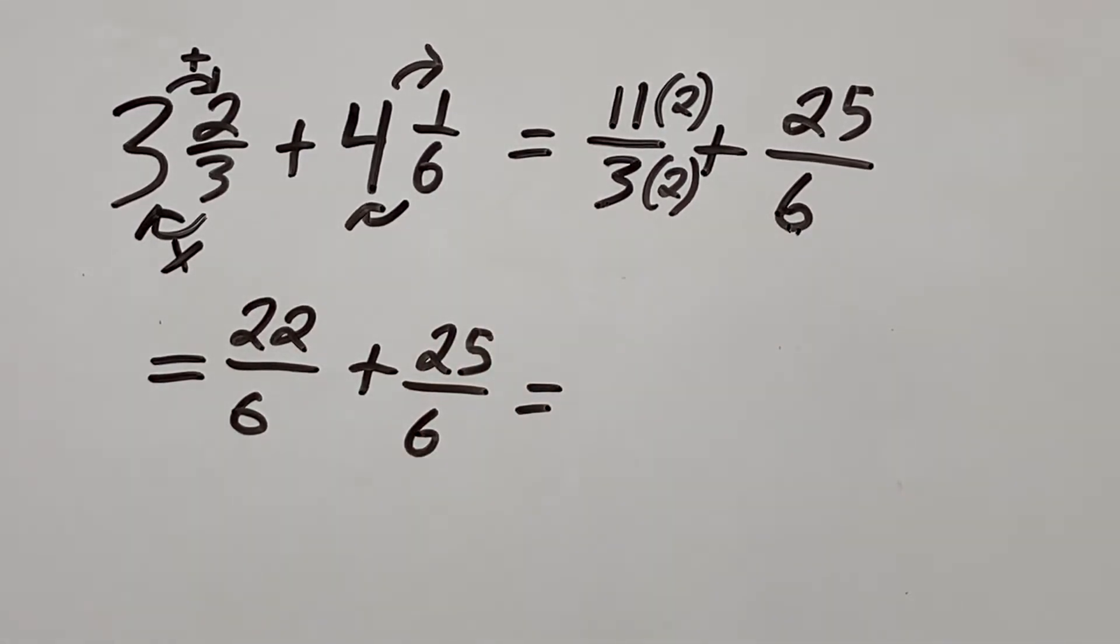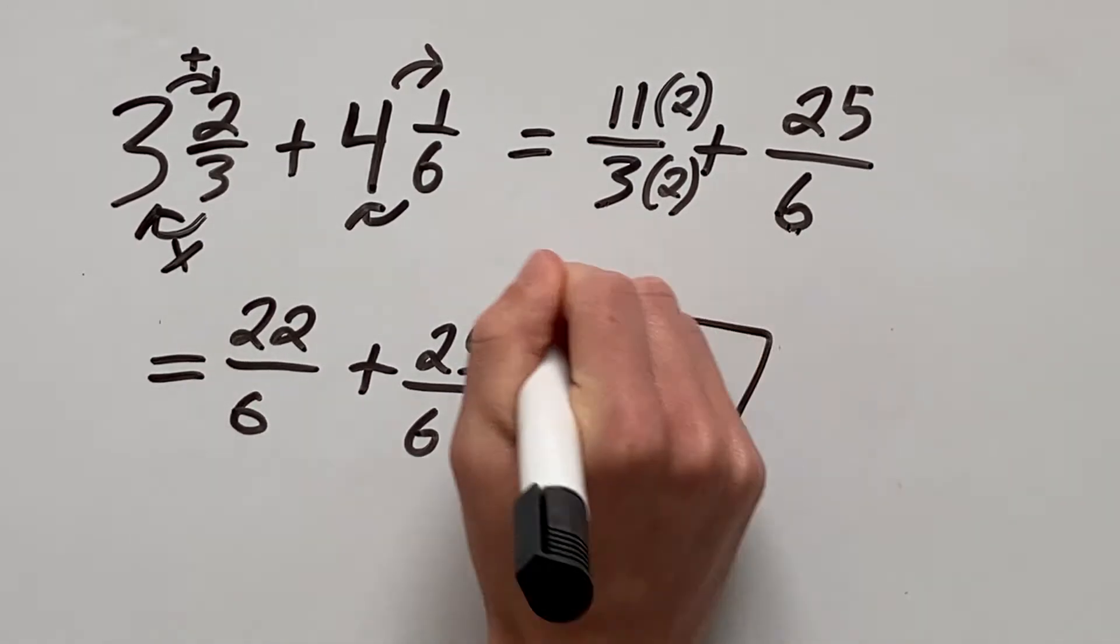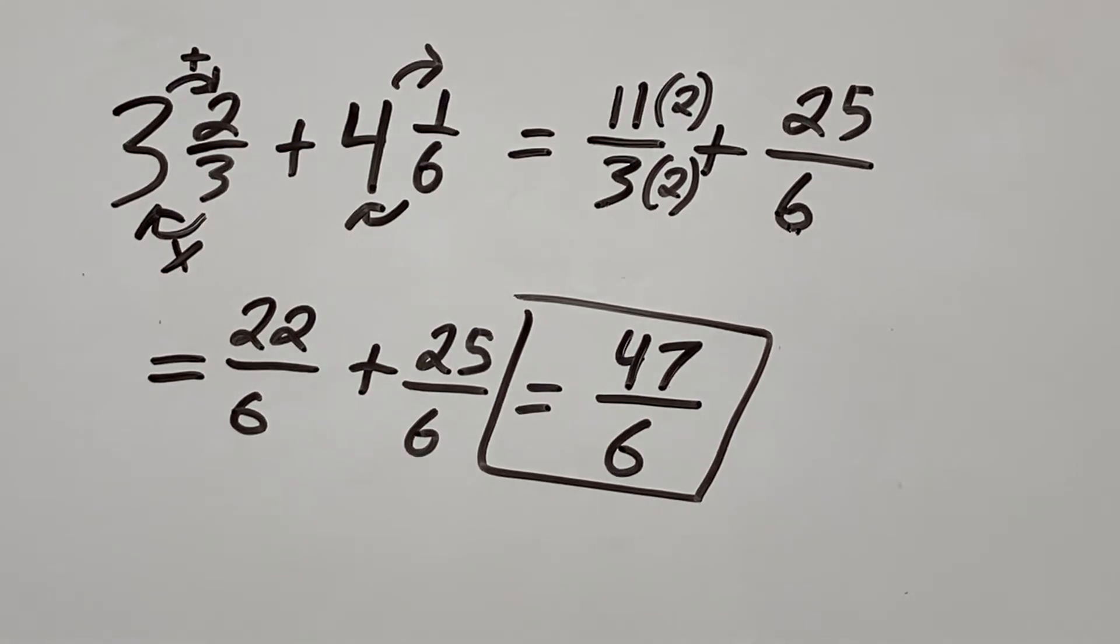And now all we have to do is add across. So 25 plus 22 is 47 over 6. And that is our answer.